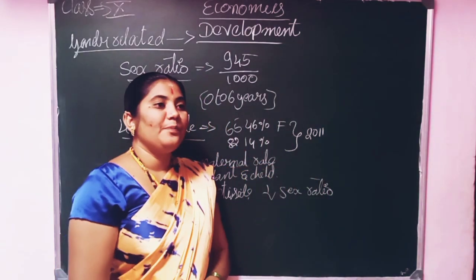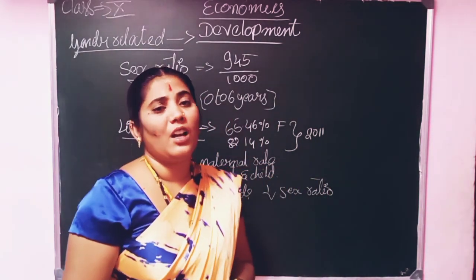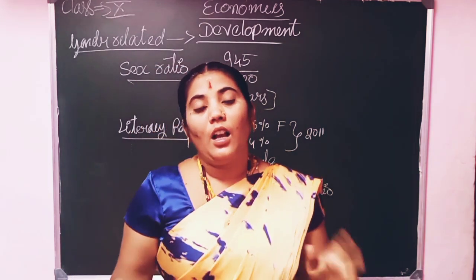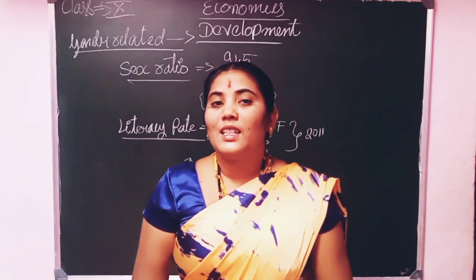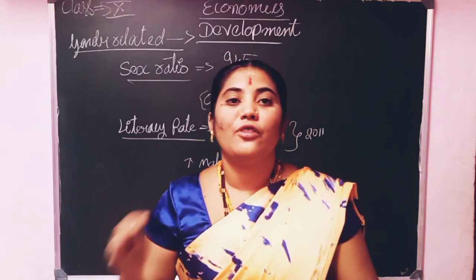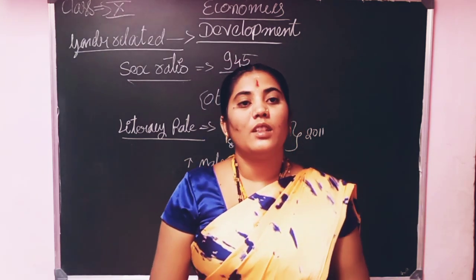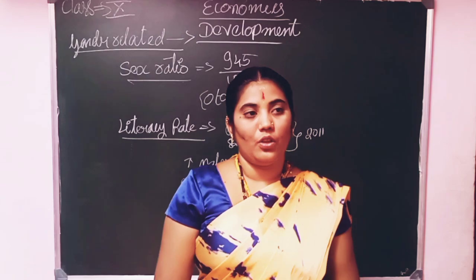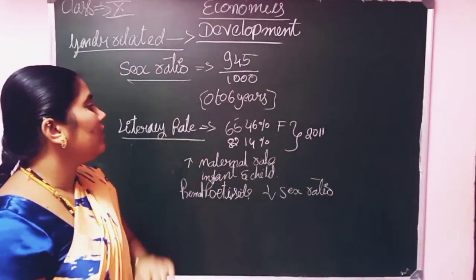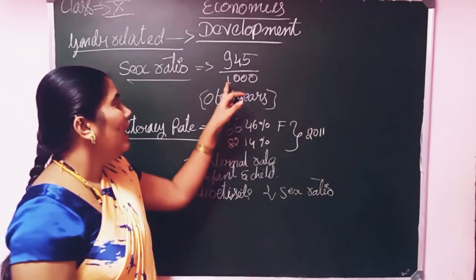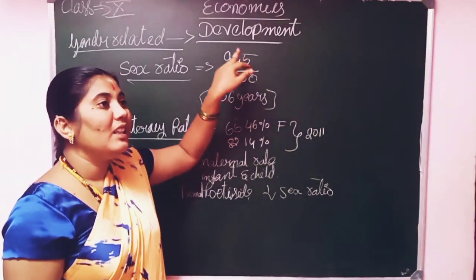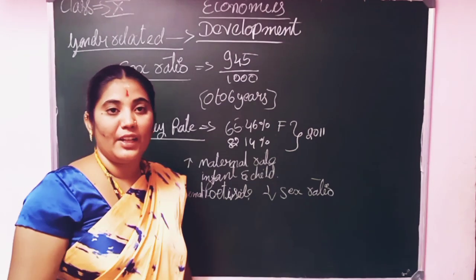How we can see whether women are getting development or not is according to the sex ratio. Sex ratio means the gender ratio — how many women there are per men. According to the 2011 census, for every 1000 men, the ratio of women is 945.